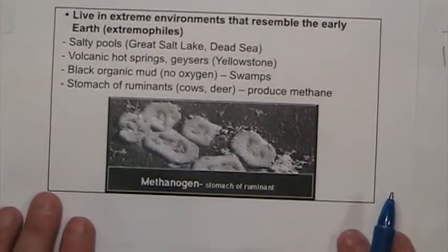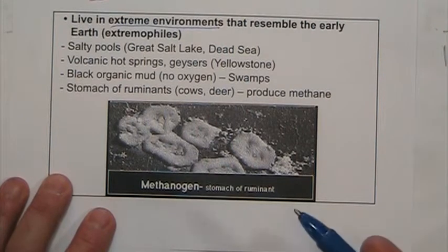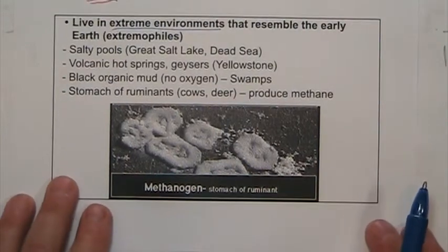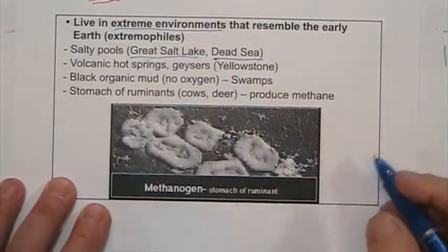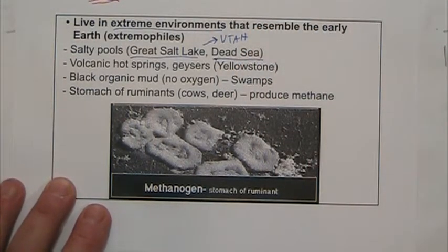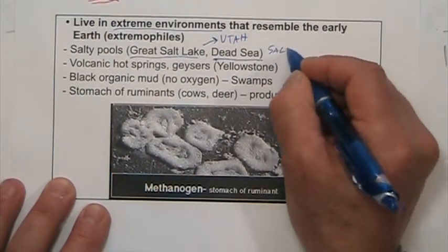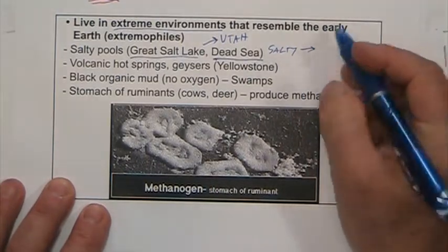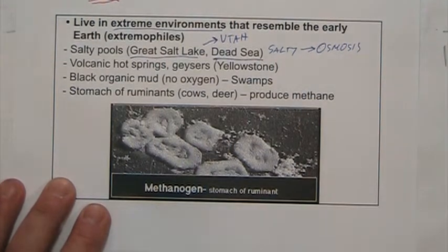These organisms are typical of extreme environments that resemble early Earth conditions. They live in salty pools like the Dead Sea or the Great Salt Lake in Utah — extremely salty places where nothing else can survive because osmosis would cause water loss. But these bacteria can tolerate that and do not lose their water.